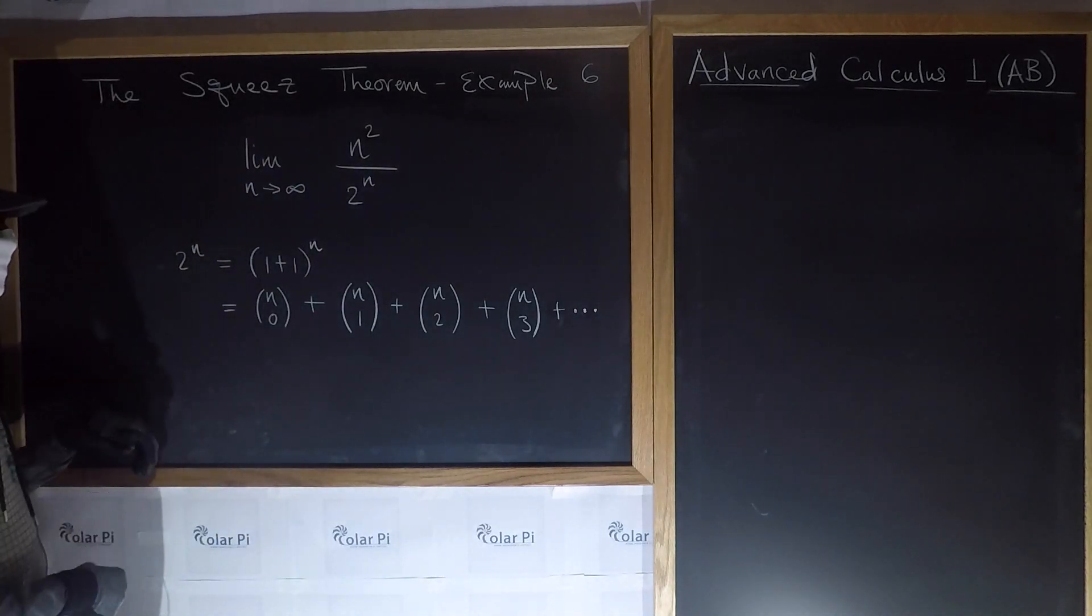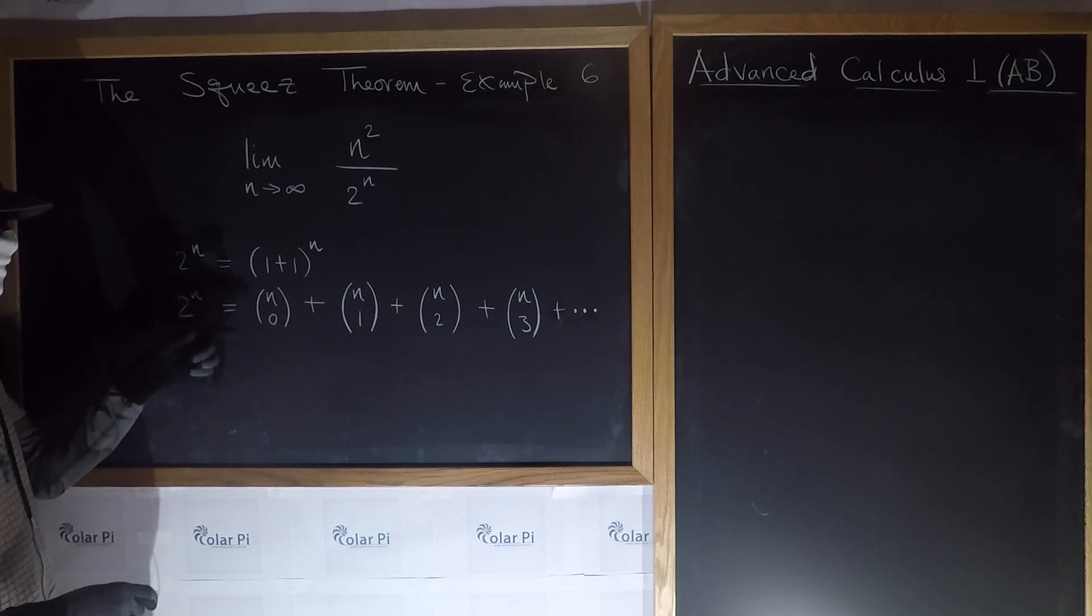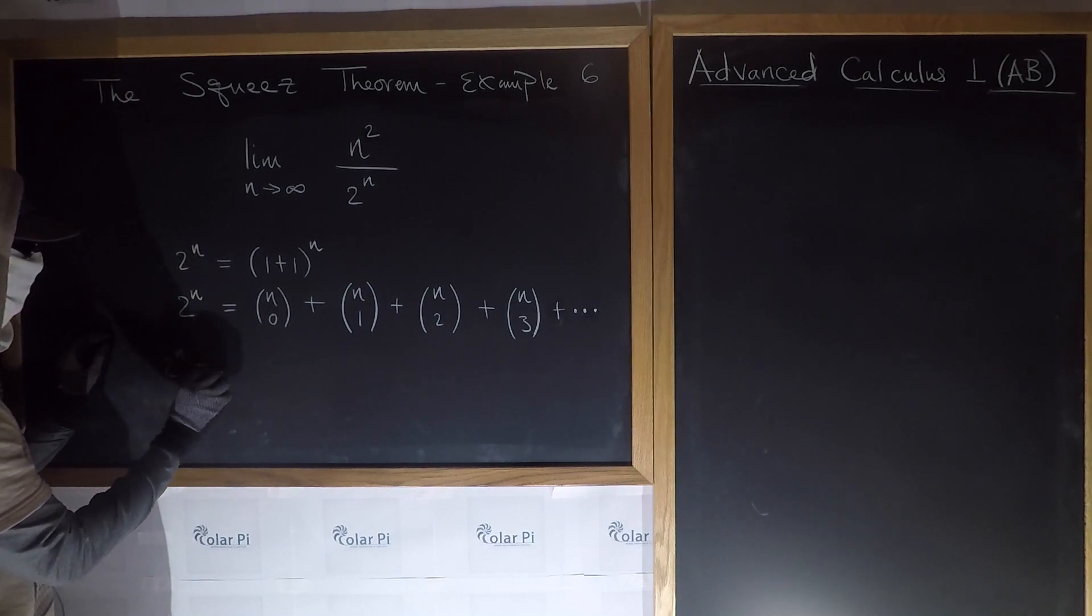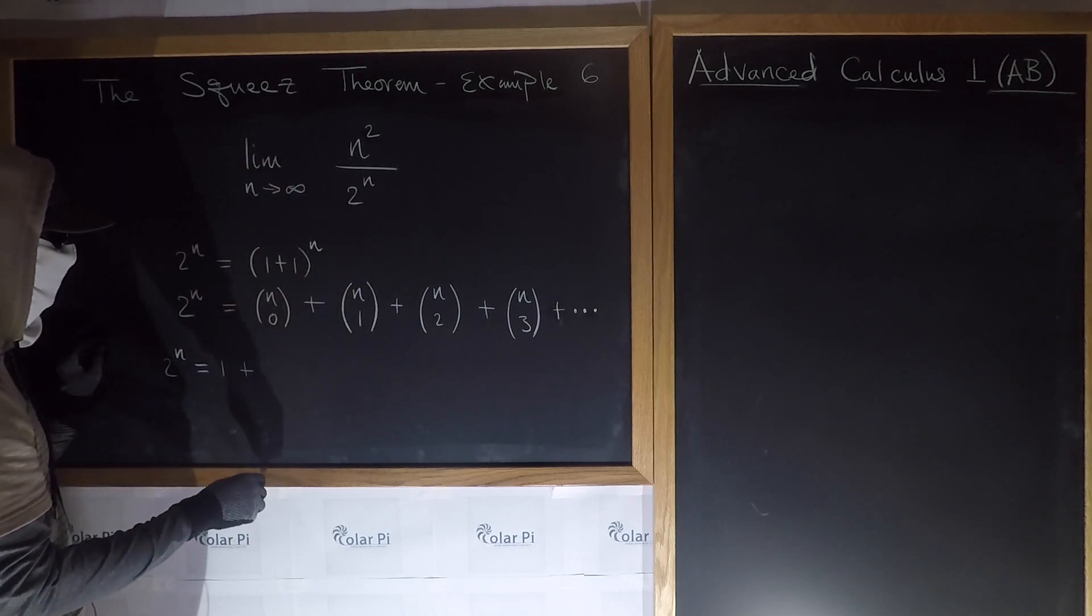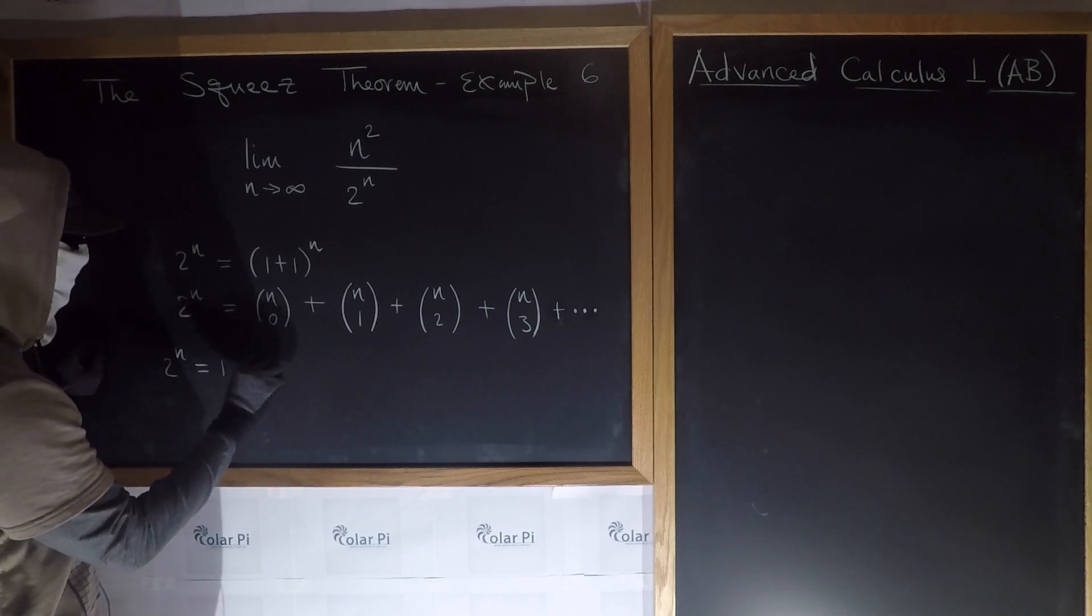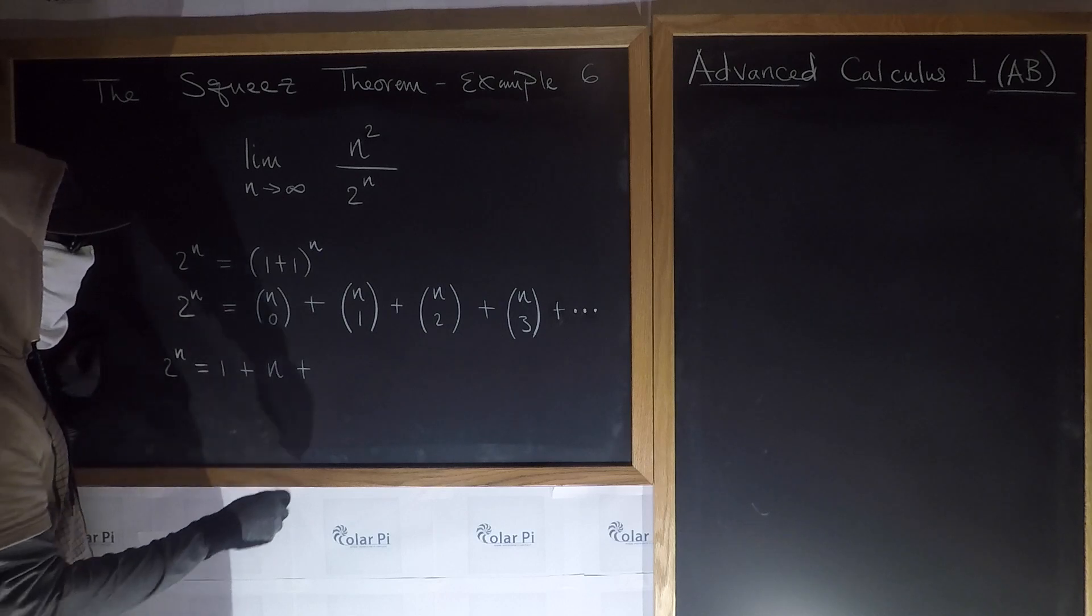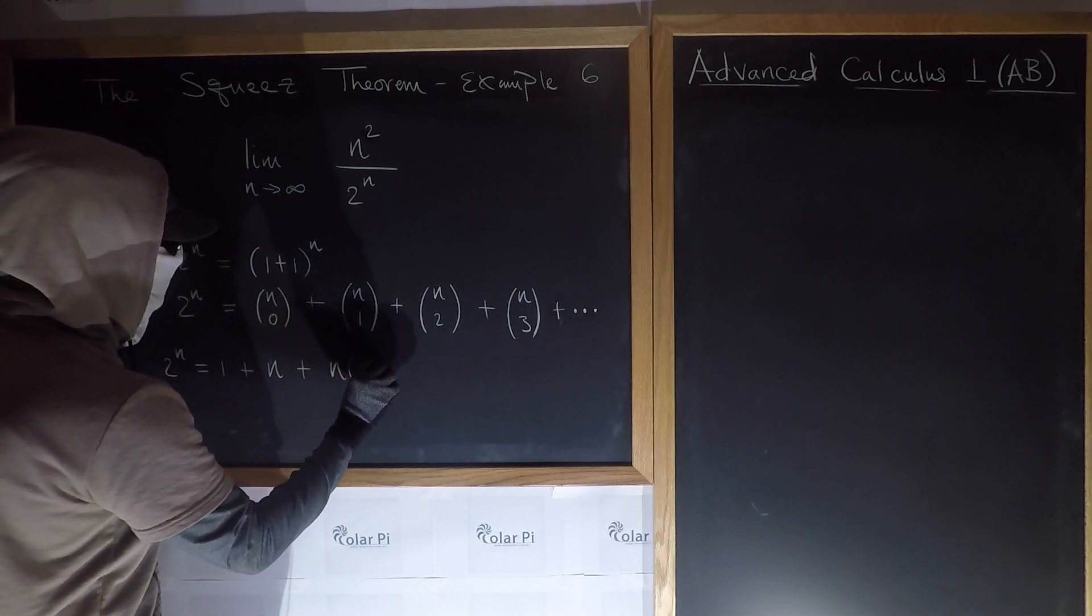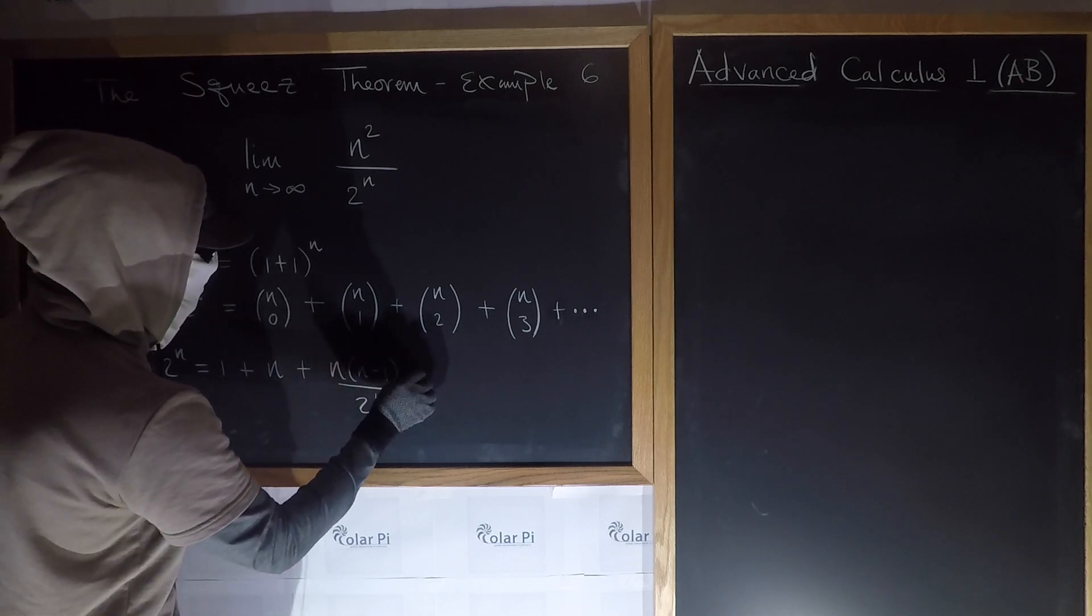Now, n choose 0 is, and this again is equal to 2 to the n, n choose 0 is 1, so we see that 2 to the n is equal to 1 plus, this one is for n choose 0, this guy here we've already worked with an example for, so it's just going to be n, plus,